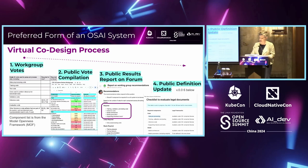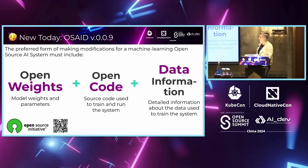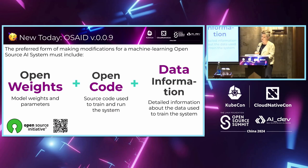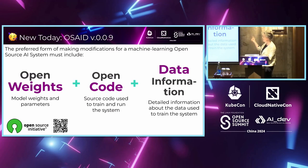So what does that look like for the current version 0.09 that we're just releasing? We are saying that the preferred form for making modifications to a machine learning open source AI system must include: open weights — model weights and parameters; open code — source code used to train and run the system; and data information — detailed information about the data used to train the system. This is a quick one-page snapshot of what is the preferred form in version 0.09, and you can scan the QR code to get the full text.